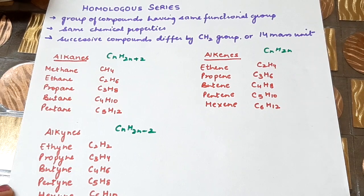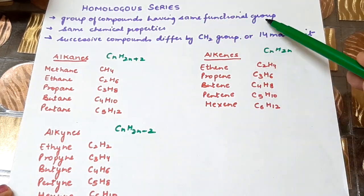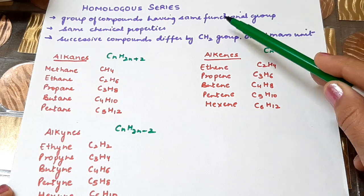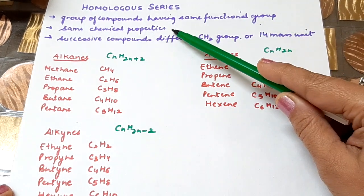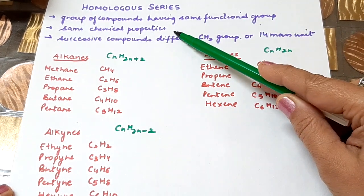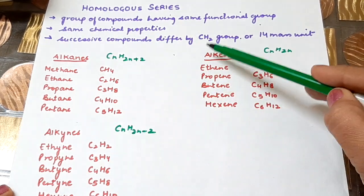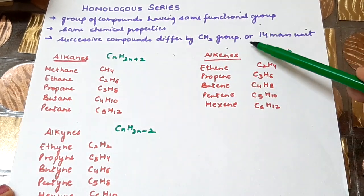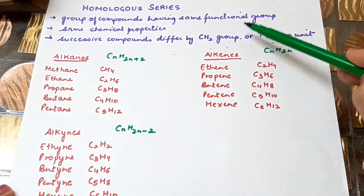It is a group of compounds having the same functional group. So first, they have the same functional group. Second, they have the same chemical properties. And third, successive compounds differ by a CH2 group or 14 mass units.